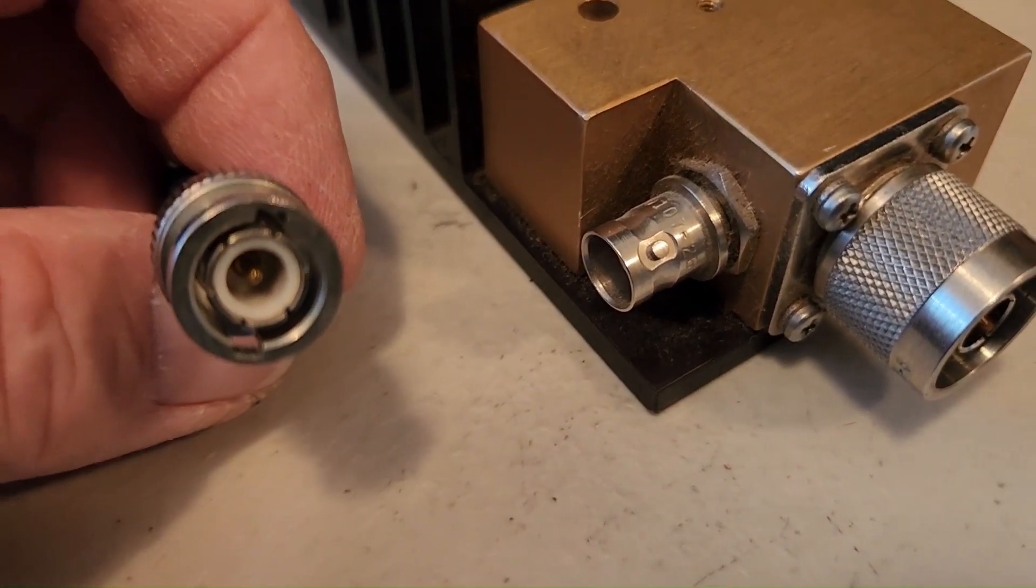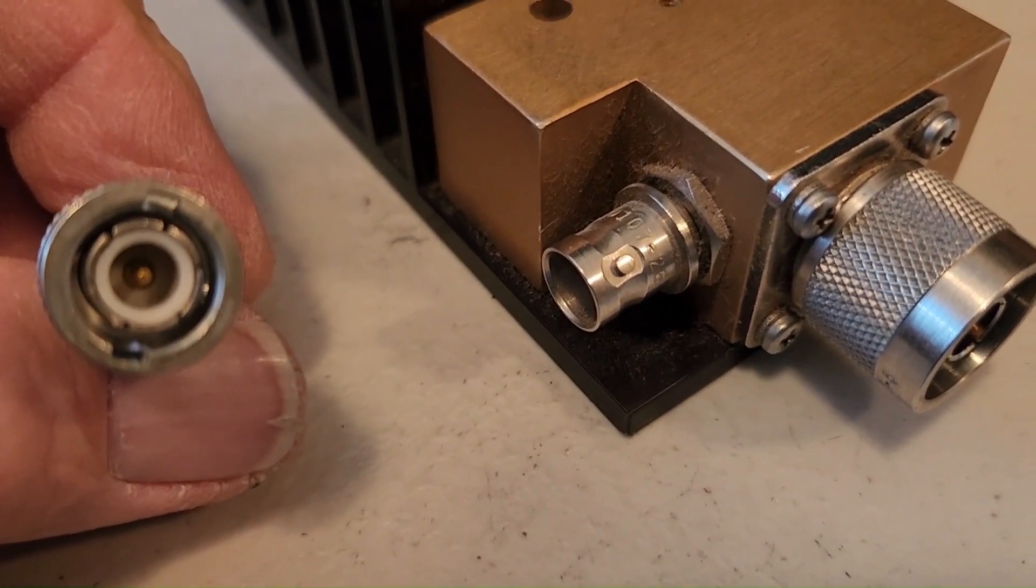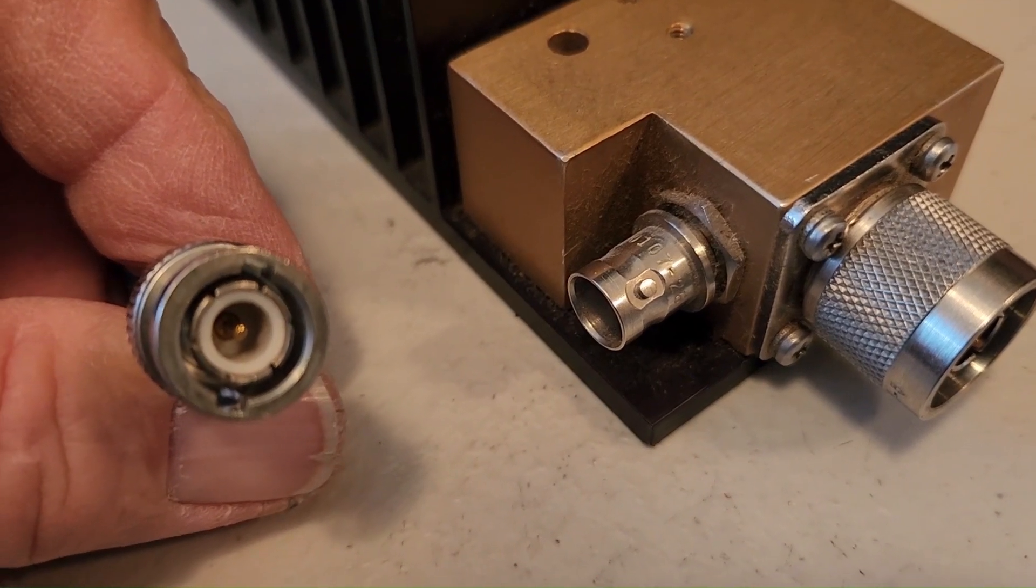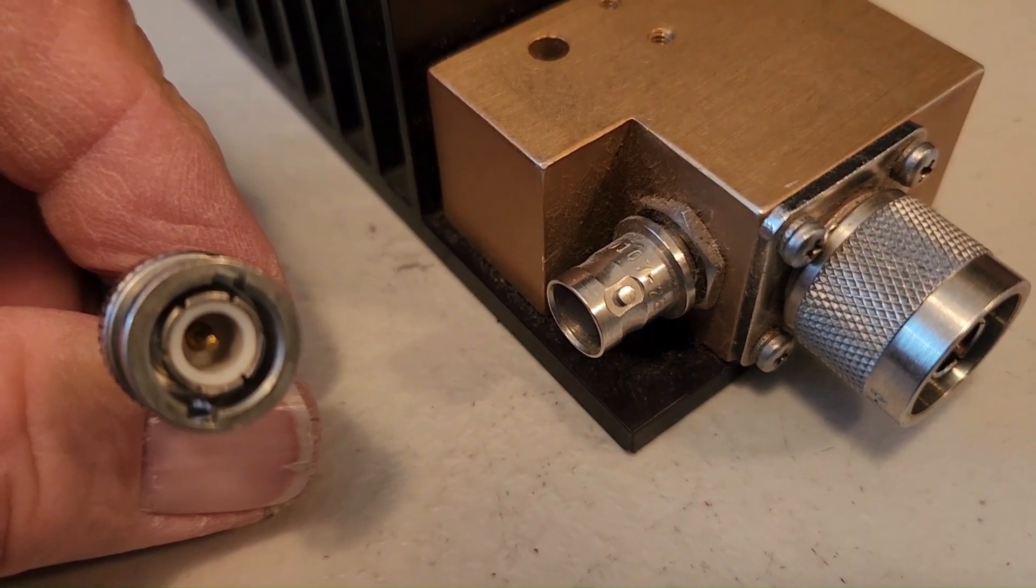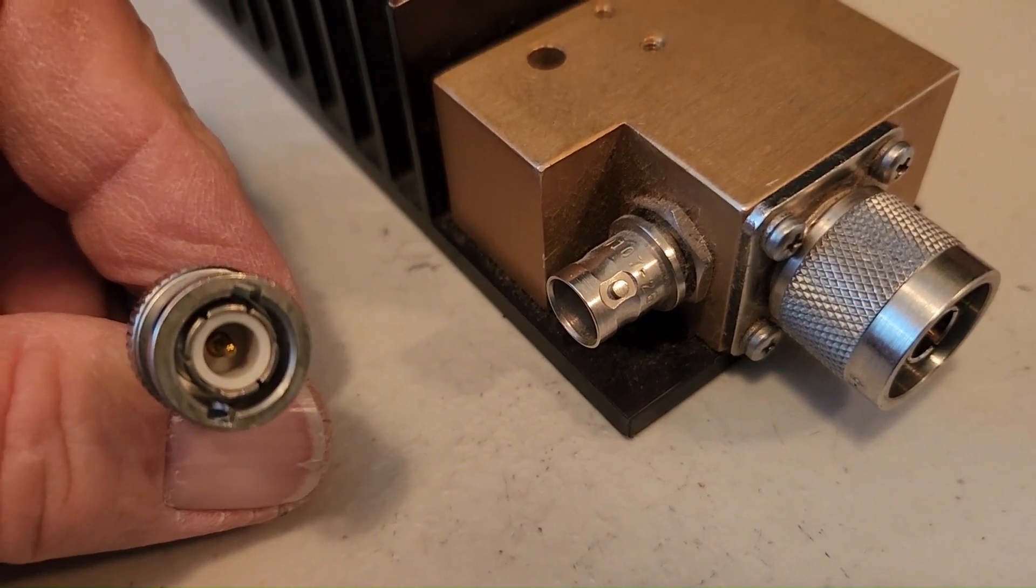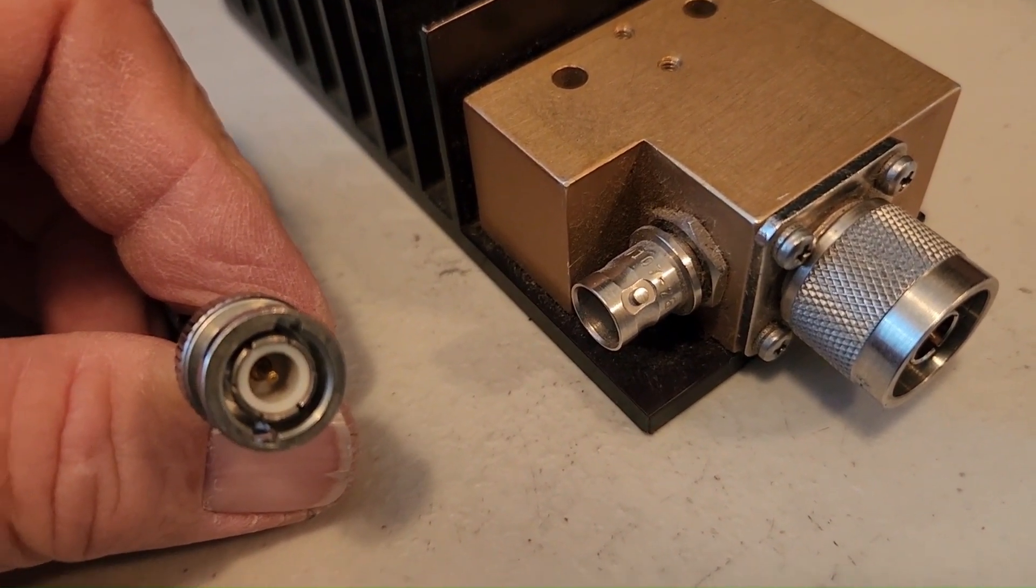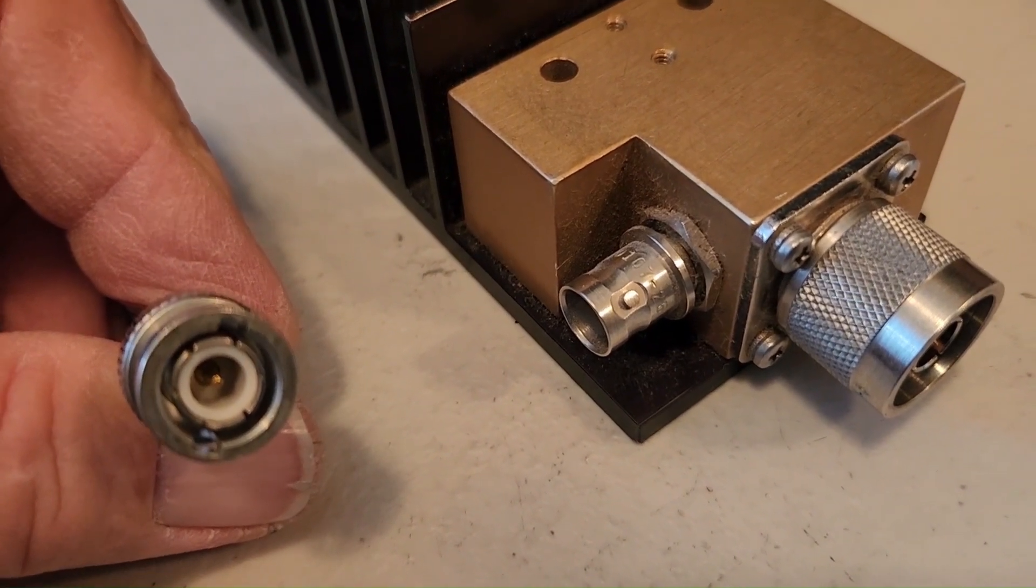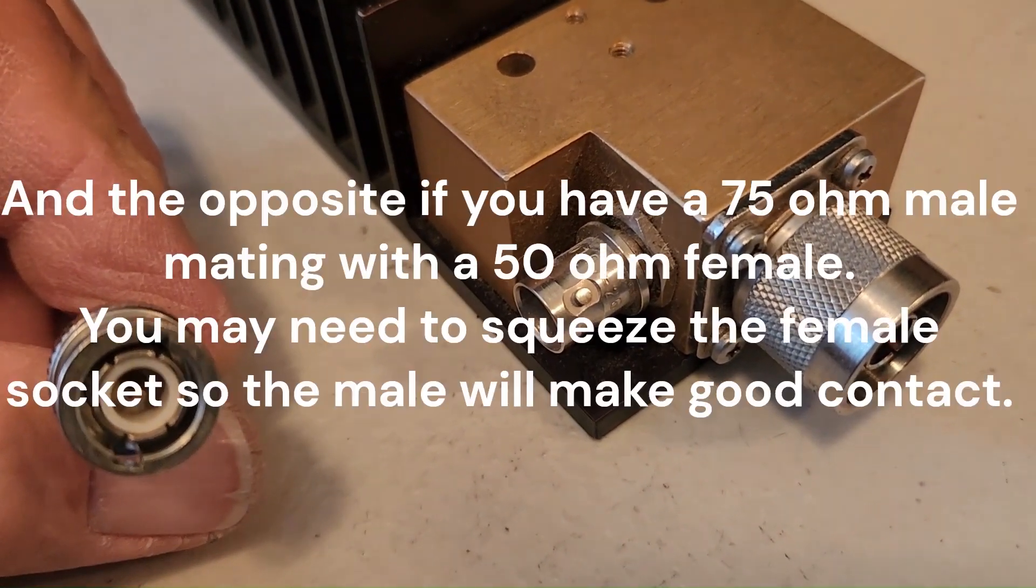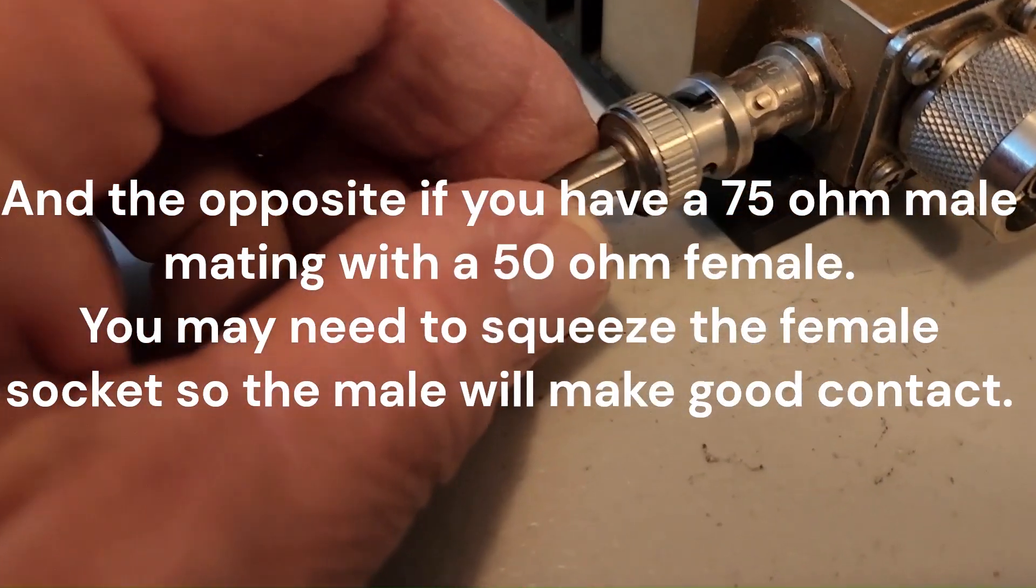The BNC doesn't have the issue of not lining it up correctly like the N does, but you still have the 50 ohm male into a 75 ohm female issue that if you ever have to do, you need to correct her to make sure that she's pinched back together so she'll fit against the next connector properly there.